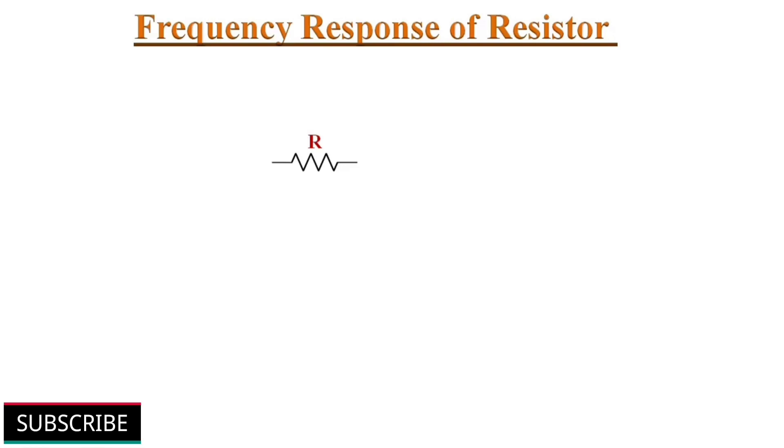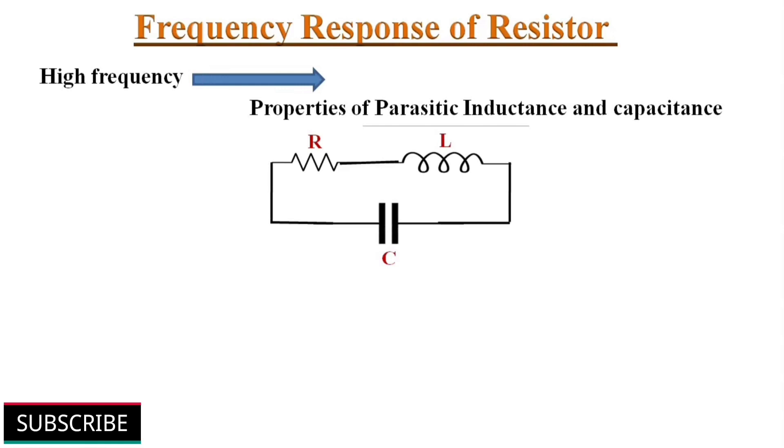Next parameter, frequency response of resistor. Ideally, resistors should act as a pure resistor, but at high frequencies some resistors also have properties of parasitic inductance and capacitance. Because of this, they can operate only at limited frequencies. The frequency response of a resistor tells us at what frequencies the resistor acts as a pure resistor. So for higher frequency applications, we should consider this parameter of a resistor.